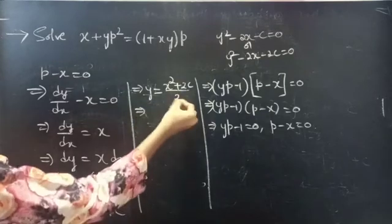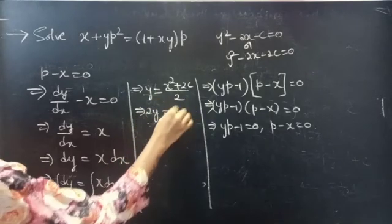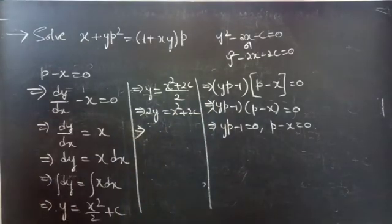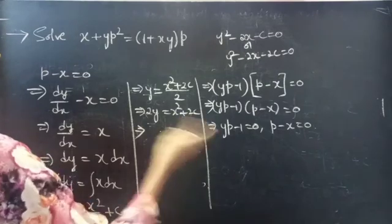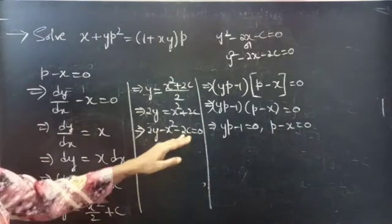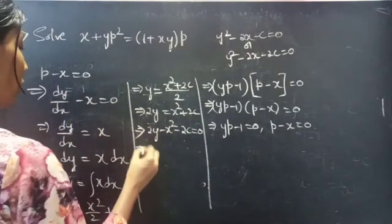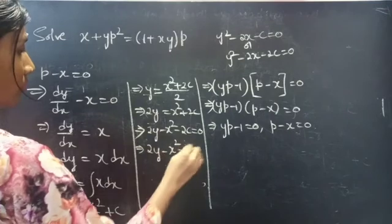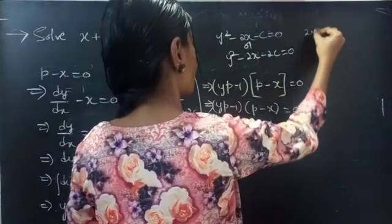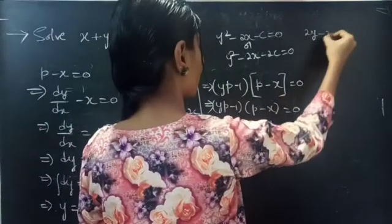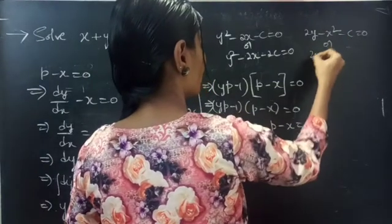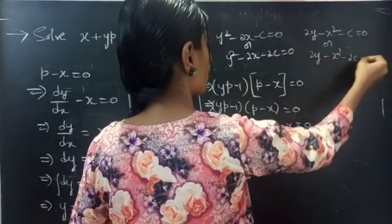Taking 2 as LCM, we get 2y equals to x squared plus 2c. Bringing the 2 to the LHS gives 2y minus x squared minus 2c equals to 0. This is the second solution, which we can also write with the constant renamed as c.